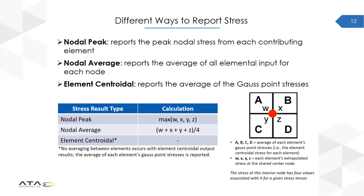With this insight into how to appropriately request nodal and elemental stress results, what is the proper way to report nodal and elemental stress? The three most common methods are nodal peak, nodal average, and element centroidal. Nodal peak reports the peak nodal stress from each contributing element. Nodal average reports the average of all elemental input for each node. And element centroidal reports the average of the Gauss point stresses.